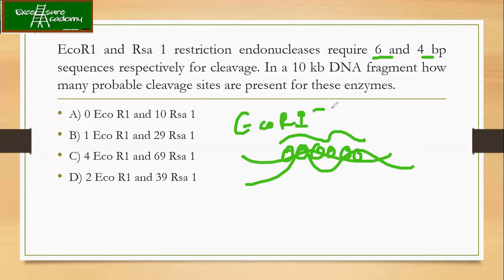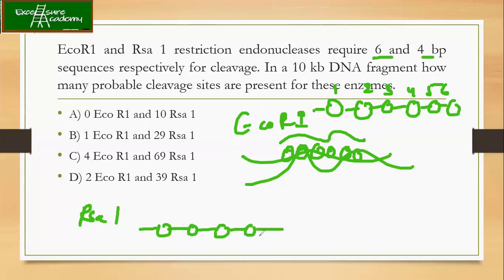So let's say that it needs six sequences like this: one, two, three, four, five, and six. And Rsa1 needs four sequences in a particular DNA stretch. Let's say five prime to three prime for both.